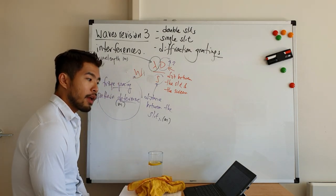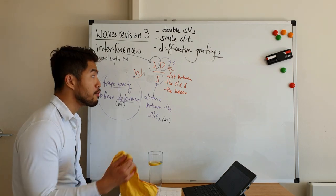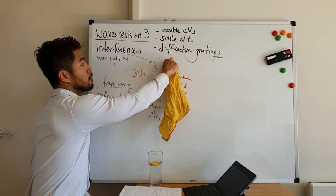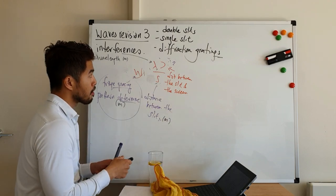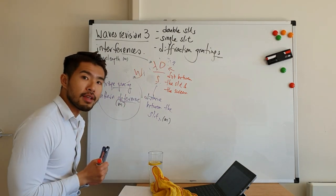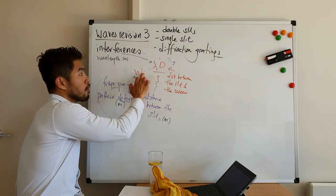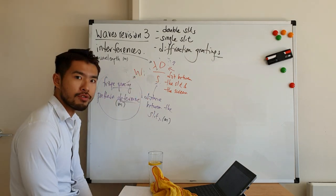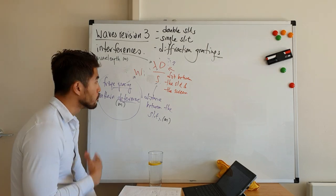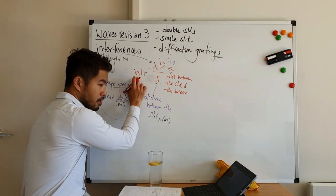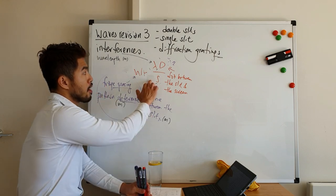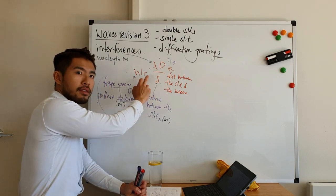Question 3 is one of those multiple choice questions that tests whether you actually understand the concept. It also asks what will increase fringe spacing. To increase W, λ and D must increase and S must decrease — because λ and D are in the numerator and S is in the denominator.